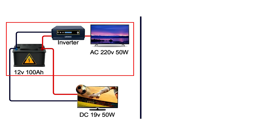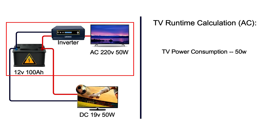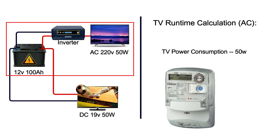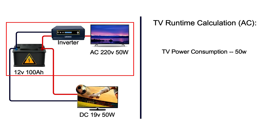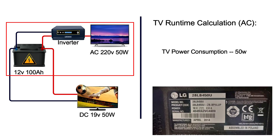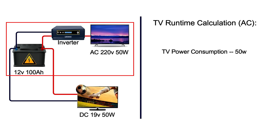We are using these parameters for a simple calculation to get the runtime. Parameter one: TV power rating, which is the amount of power the TV consumes. You can find your TV power rating on a sticker on the back of the TV or in the TV manual. You can also use a smart meter to measure how much power it takes. Power is measured in watts — you see ratings like 50 watts, 100 watts, and so on. In case the power is specified in current or amps, as you can see on the sticker for this TV, multiply the current by the TV input voltage to get the rating in watts.